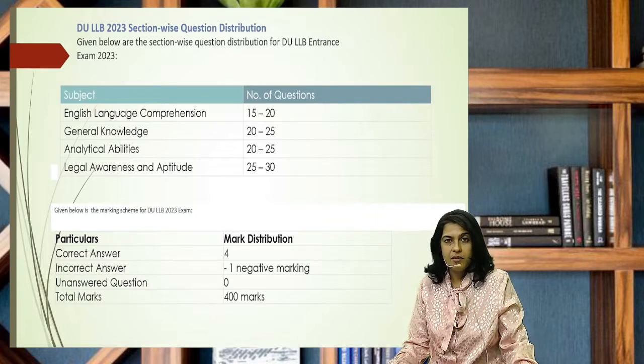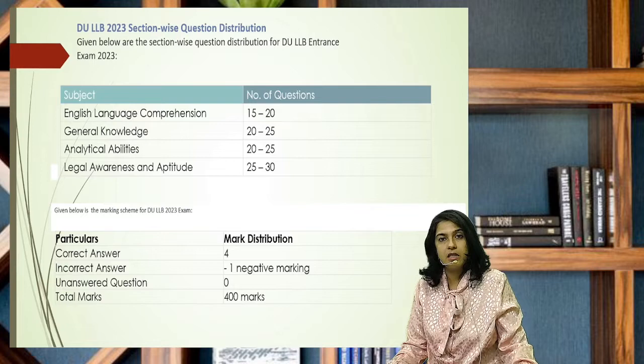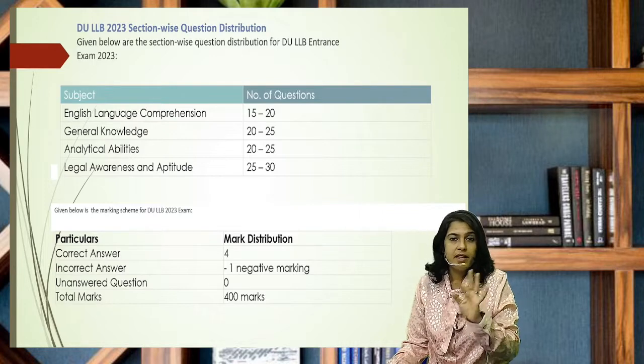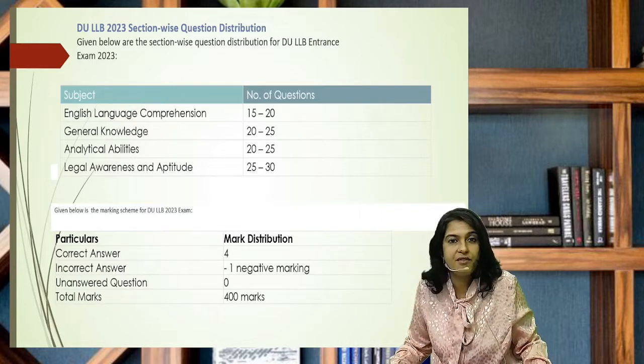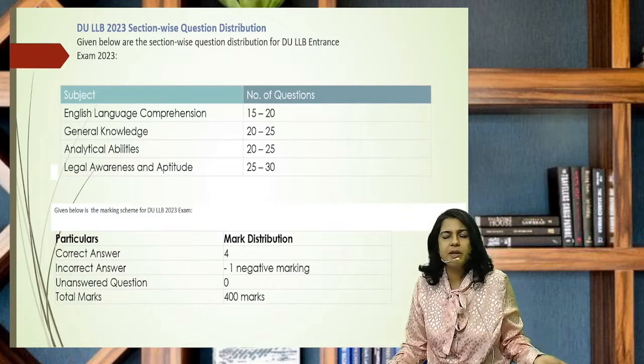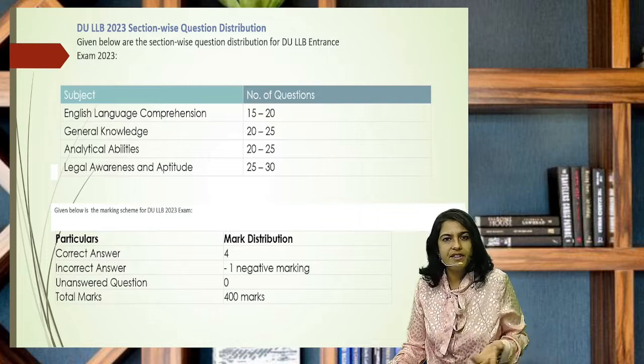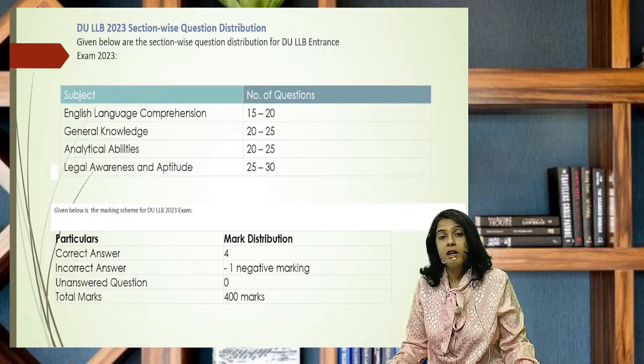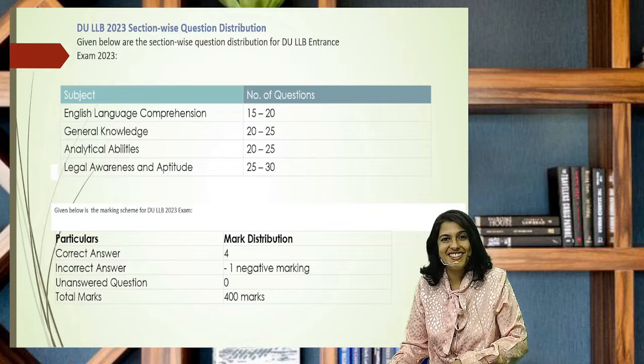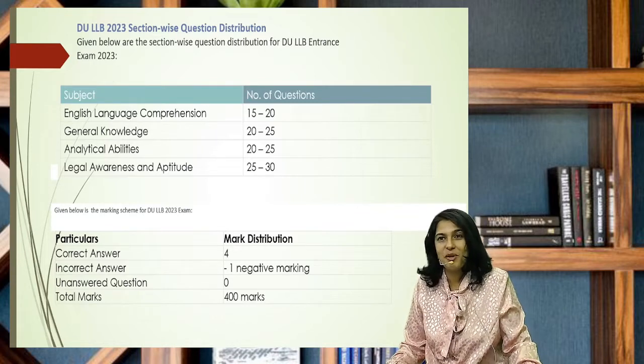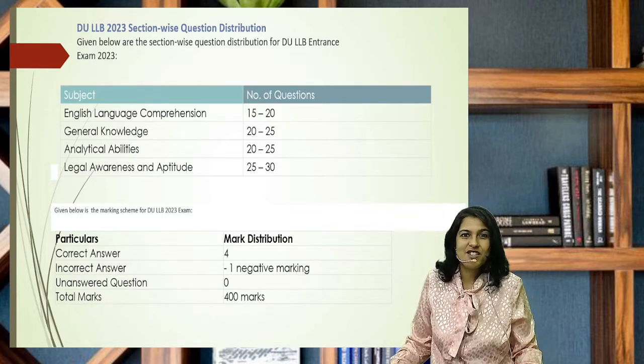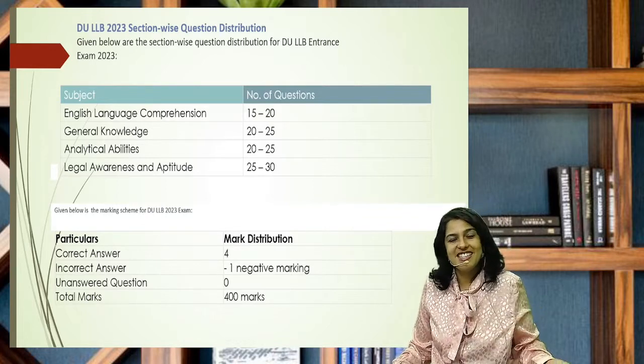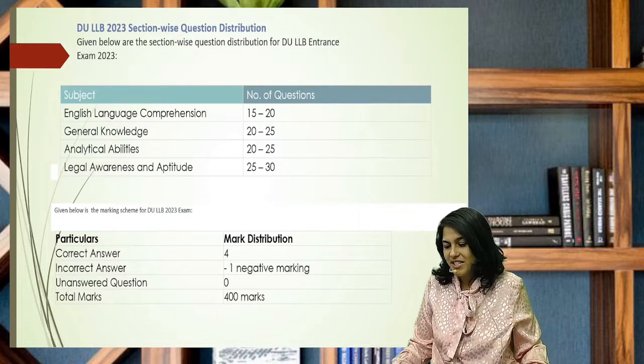For a correct answer you get four marks. Negative marking is minus one. So yes, DU does have negative marking, please remember. For unanswered questions you won't get any score - there's no negative marking if you don't answer. But if you answer and it's wrong, then minus one. Total marks 400. It seems like a lot, but every question has four marks, minus one negative marking. So 100 questions - if you apply maths here, it's 100 questions. So you've got the number of questions as well there.